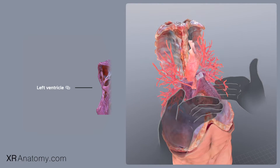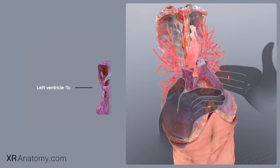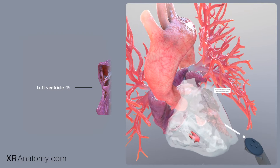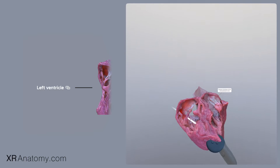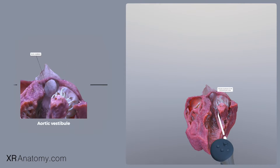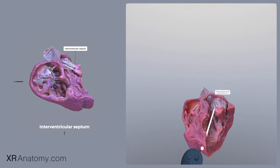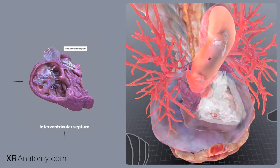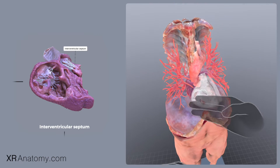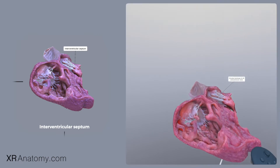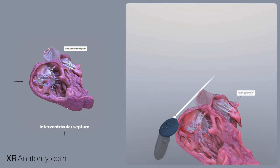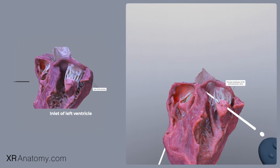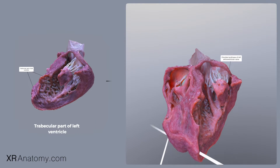From a frontal view, the left ventricle is largely obscured by the right ventricle positioned in front of it. Furthermore, the interventricular septum constitutes the anterior wall and part of the right side of the left ventricle. The left ventricle comprises several key areas: an inlet portion, an outlet portion, and a trabecular part.